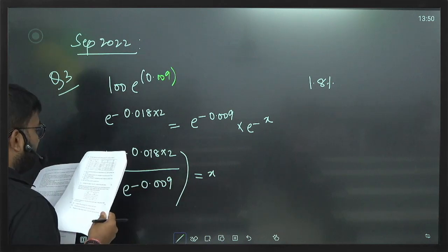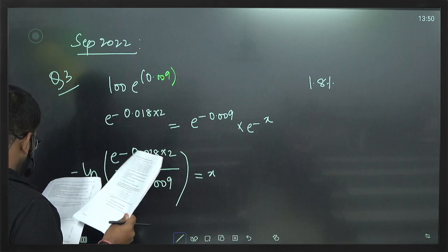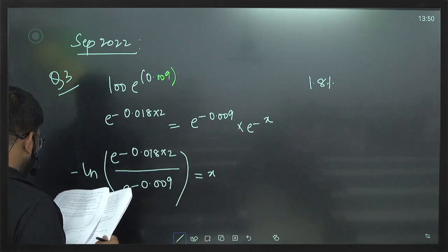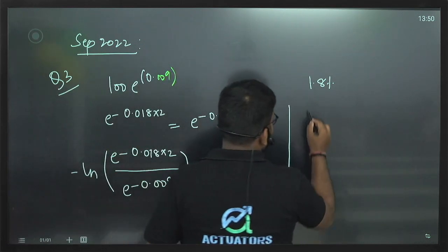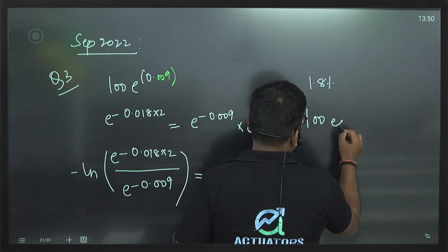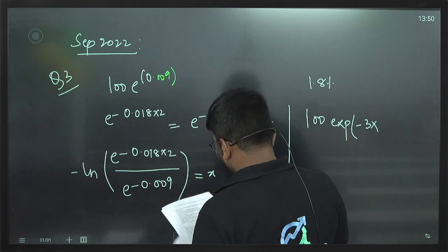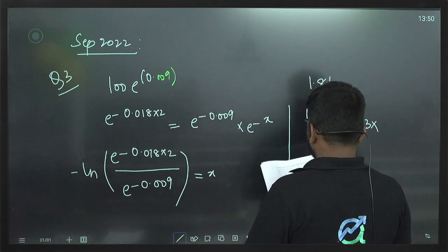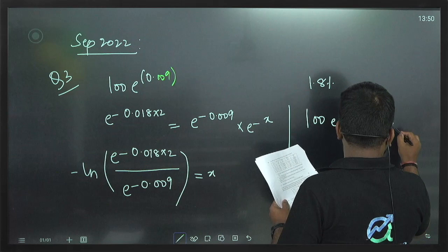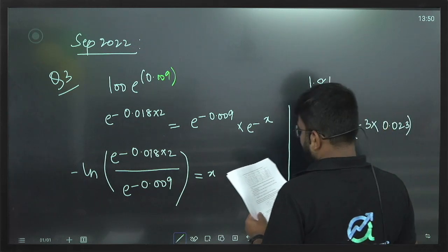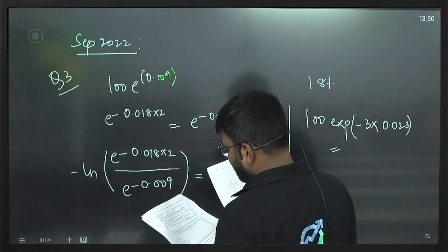Then the third task is to find P0T. Use the 3-year spot rate and you'll get it. So: 100 × e to the power minus 3 into the 3-year spot rate, which is 0.023. That is the 3-year spot rate, so the answer comes from there.